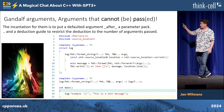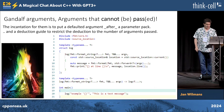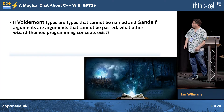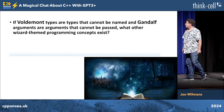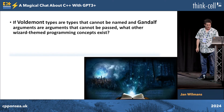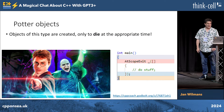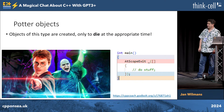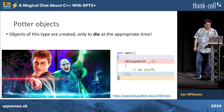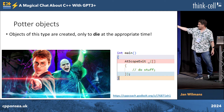So if you know what part of the standard guarantees that this works, I would be really happy to know that, but it works well. Now, if Voldemort types are types that cannot be named, and Gandalf arguments are arguments that cannot be passed, what other wizard-themed programming concepts exist? So let's ask ChatGPT what it thinks. And it came up with a surprising list, which I'll have to really quickly go through. This is a Potter object, which was created just to die at the appropriate time, like a scope exit.